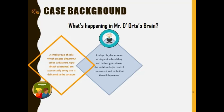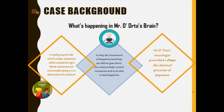The striatum helps control movement and to do that normally it needs dopamine. The neurons in the substantia nigra were dying, reducing the dopamine responsible for movement. The dopamine that the striatum needs for movement was declining, causing problems. Mr. De Orta's neurologist prescribed L-DOPA, which is the chemical precursor of dopamine.